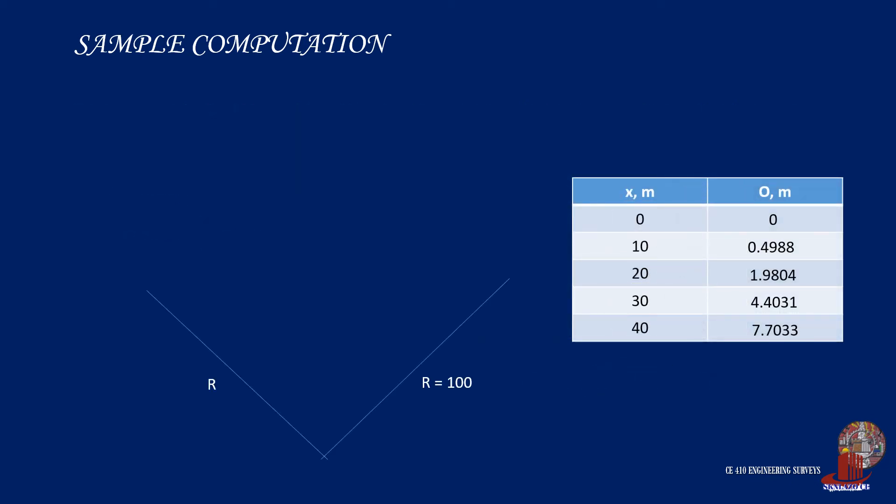From the field, identify where points PC and PT are, and draw the tangent lines. T was computed as 41.4213 meters, where we are to designate a 10 meter interval. Now simply measure the values of O from the computation we just had earlier, and do the same thing on the other end or from point PT to complete the symmetrical sides of the curve. Then connect all the end points to draw the curve.